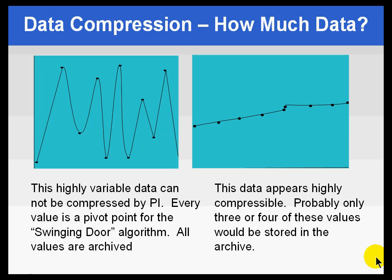Here are just a couple of notes about compression. You will notice that some sets of data, just by their very nature, are highly compressible. Take a look at this trend right here — we're seeing constant spikes up and down. There's not a lot of data that can be compressed out of that because it varies so much from one iteration to the next. We're probably going to be generating archive events for each value that comes in. Using the swinging door algorithm, all the values would be archived for this.